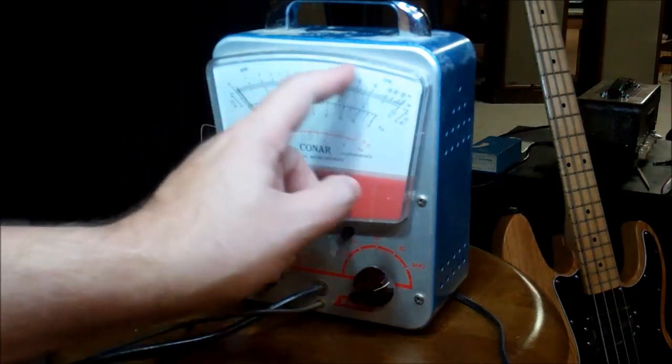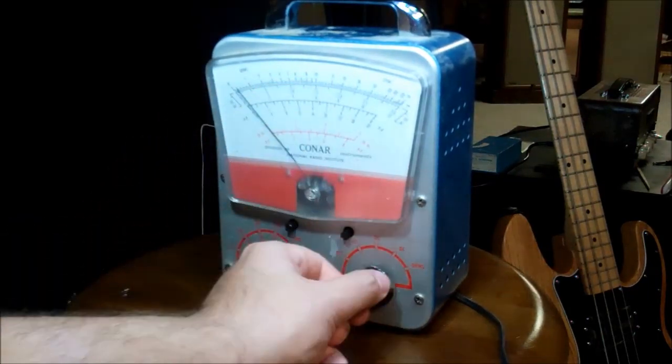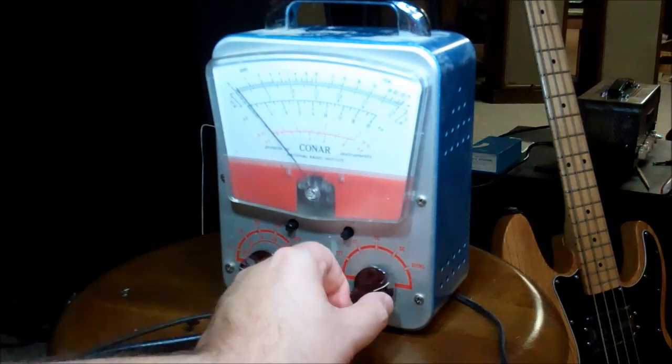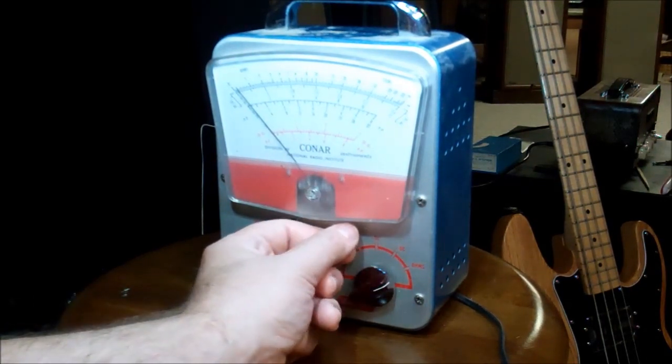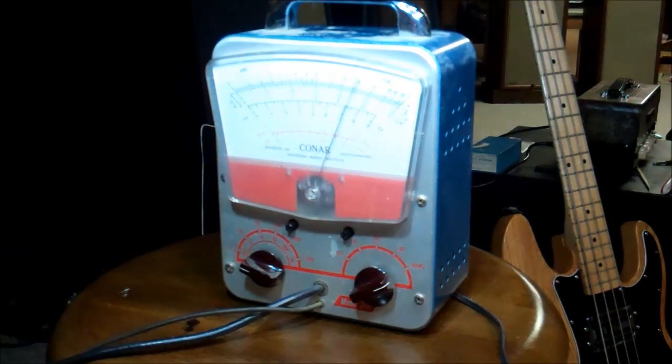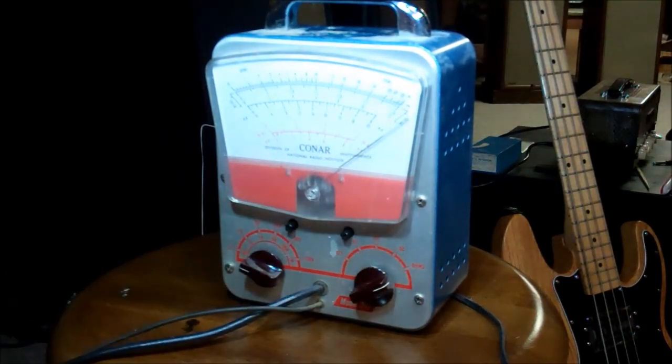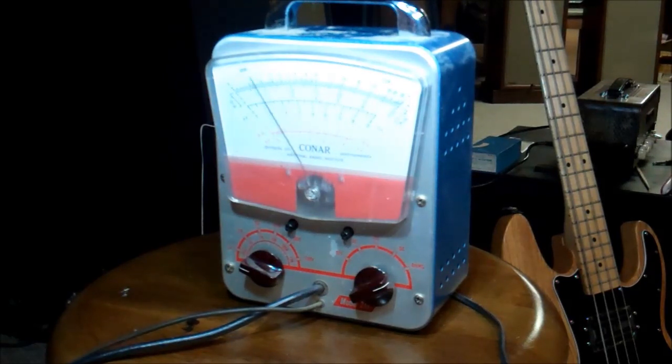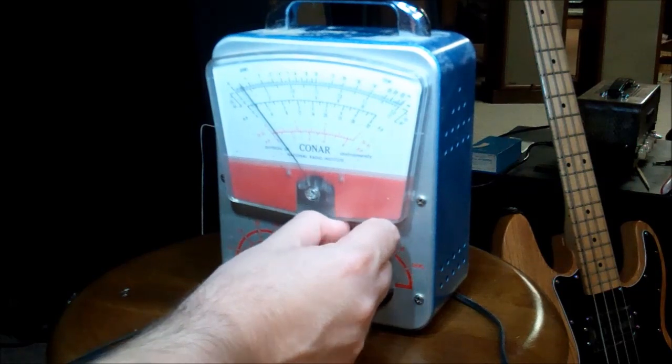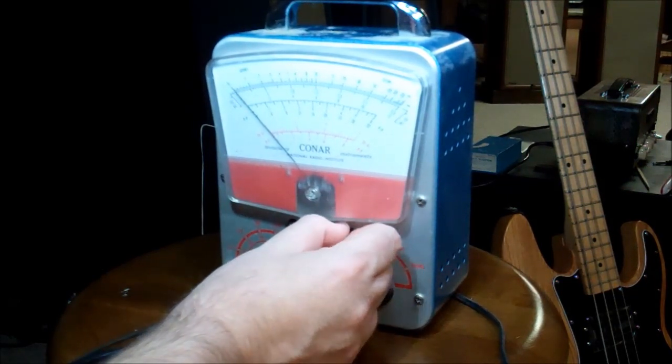That should be at one ohm, right, on the one-ohm scale times one. I should be getting somewhere with that. When I short them I should be at zero, which I am, but then I put across the resistor and I'm not showing 40-some ohms. I think that would be at infinite, is what would make sense to me.